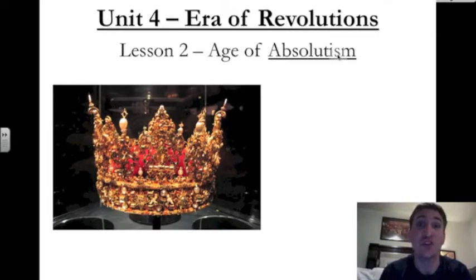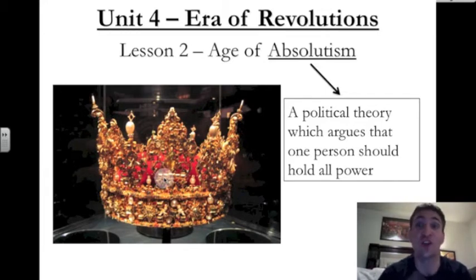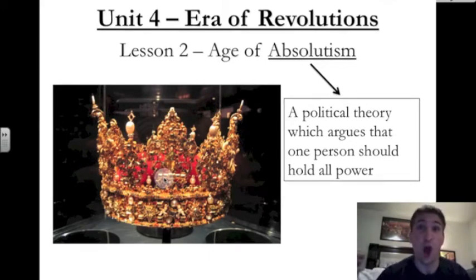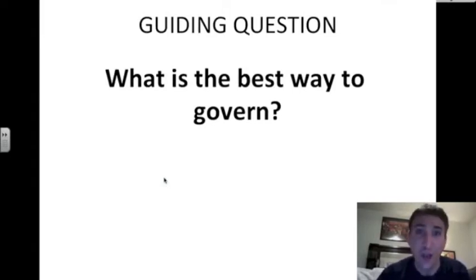The age when absolute power is given to men and women who wear these. What is absolutism? It's a political theory which argues that one person holds all power. The argument is that one person making all the decisions is better than many different people who are voting and making decisions for a government. Our guiding question for today is: what is the best way to govern? Is an absolute monarchy the best way, or are other options better? Let's explore.